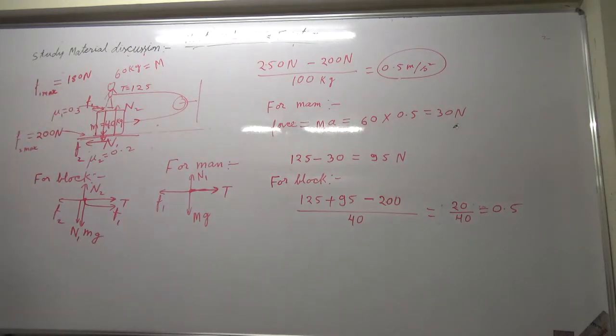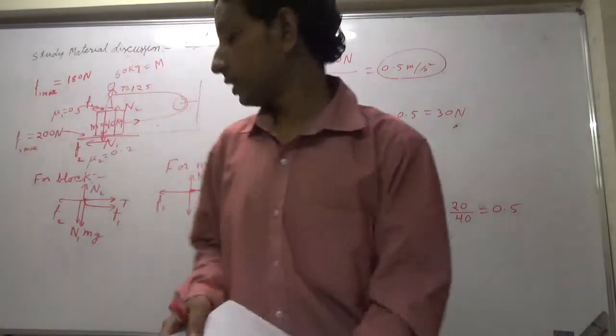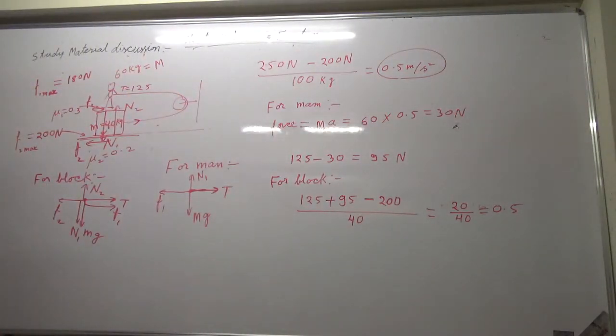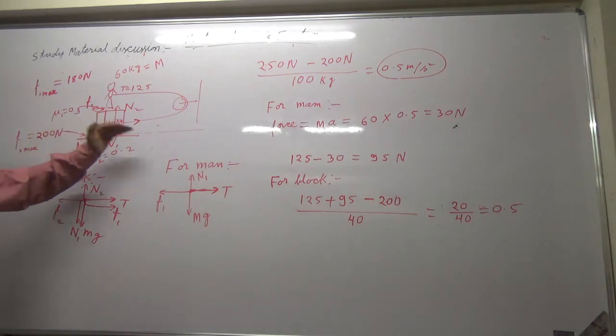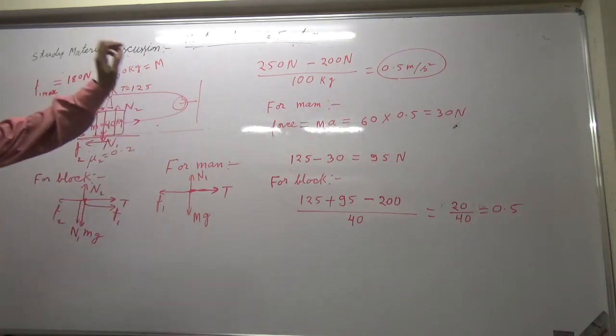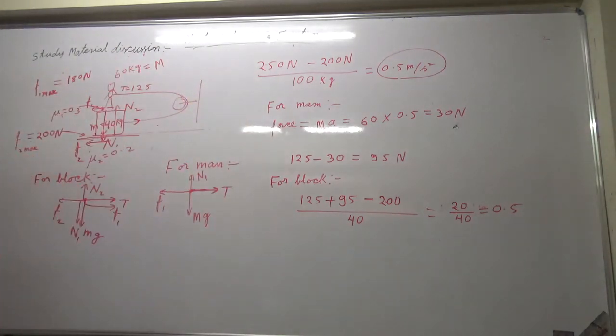The force of friction acting between A and B will be 40 newton? No. The force of friction acting between A and B will be 180 newton? This 180 was maximum value of friction, that is not the actual friction. Actual friction is 95. We have to put it together, then we have to analyze it.